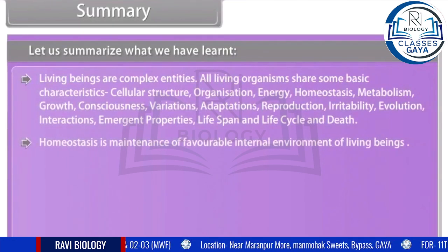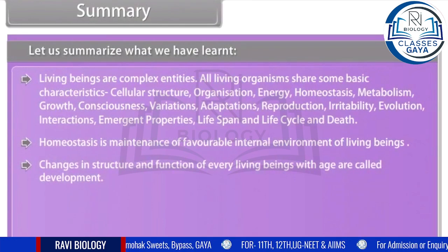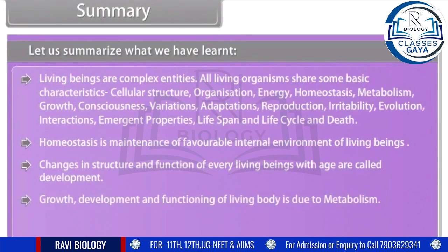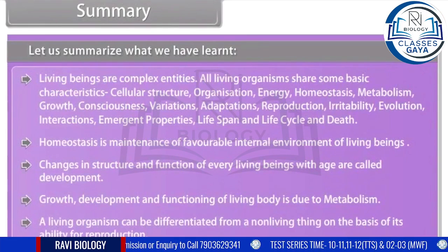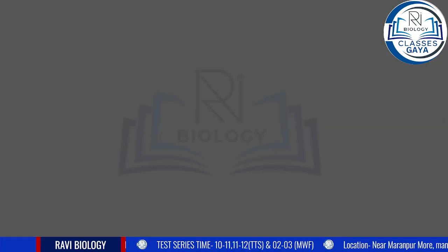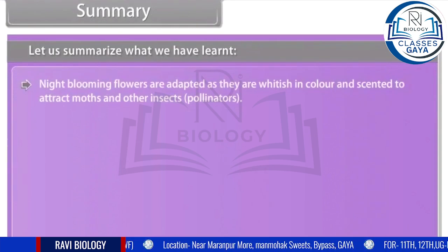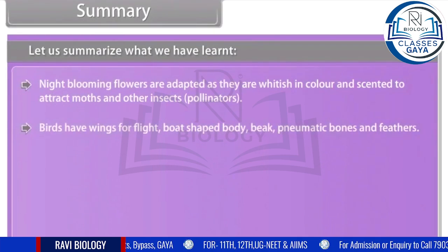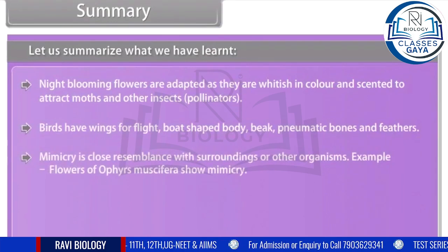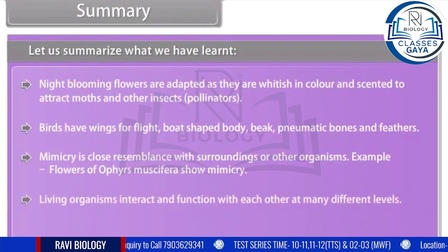Homeostasis is the maintenance of a favorable internal environment in living beings. Changes in structure and function of every living being with age are called development. Growth, development, and functioning of the living body are due to metabolism. A living organism can be differentiated from a non-living thing on the basis of its ability for reproduction. Night-blooming flowers are adapted as they are whitish in color and scented to attract moths and other insect pollinators. Birds have wings for flight, a boat-shaped body, beak, pneumatic bones, and feathers. Mimicry is close resemblance with surroundings and other organisms — for example, flowers of Ophrys musifera show mimicry. Living organisms interact and function with each other at many different levels.